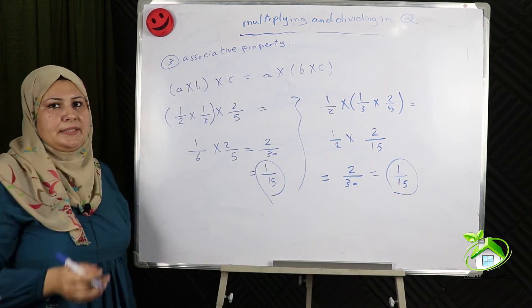Multiplicative identity or neutral element property: if A is a rational number, then A times 1 equals 1 times A equals A — the value of the rational number doesn't change. For example, 2 thirds times 1 equals 2 thirds. Any number times 1 equals the same number. So we can say that 1 is the multiplicative identity.